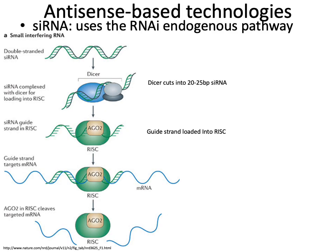When it comes to antisense-based technologies, you have two main options. The first is called small interfering RNA, or siRNA. The idea with siRNA is that you're using an endogenous RNA interference pathway to identify and cleave target mRNA. You first synthesize a double-stranded piece of RNA — an immature siRNA. When you introduce it into the cell, a complex called Dicer binds to the double-stranded siRNA and cleaves it into a shorter 20 to 25 base pair, more mature siRNA fragment.